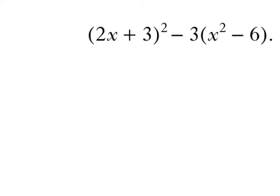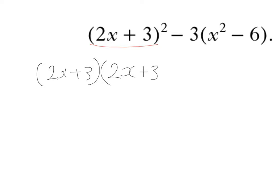So I'm going to, first of all, take care of 2x plus 3 all squared. So that's a repetition of the bracket 2x plus 3, so that's 2x plus 3 bracket 2x plus 3. After that, it's minus 3 times x squared is minus 3x squared, and minus 3 times minus 6 is plus 18. I'm going to use the FOIL method, but you can use any method that your teacher has taught you to expand out a double bracket of this type.